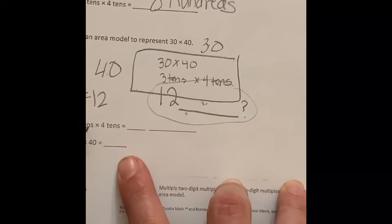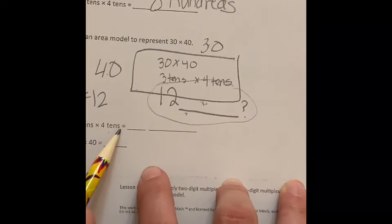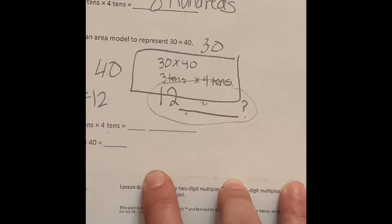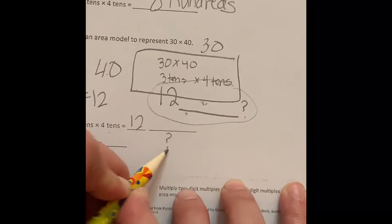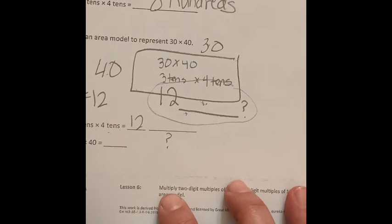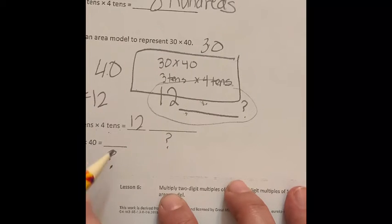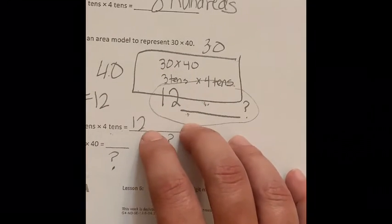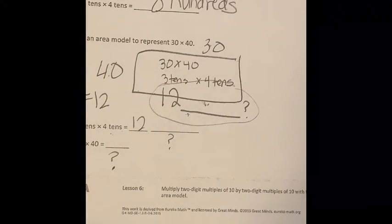This is not quite done. I want you to think about it. 3 tens times 4 tens equals? Hmm. Well, this is going to be 12 something. 30 times 40 is? I'm not going to give out the answer this time. I want you to think about it.